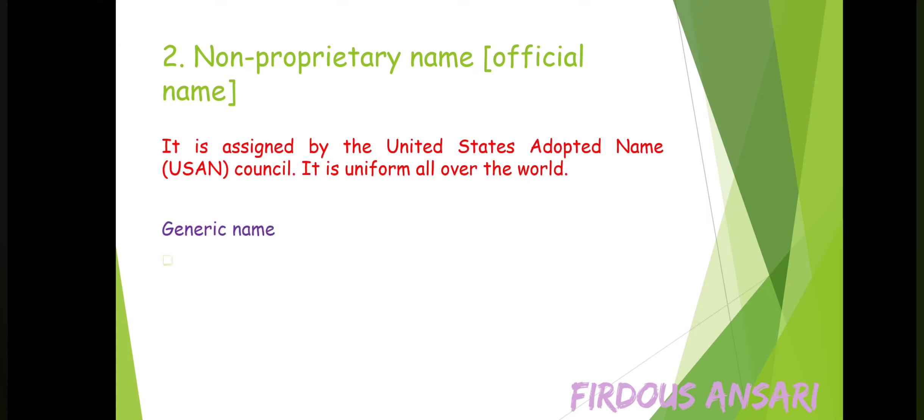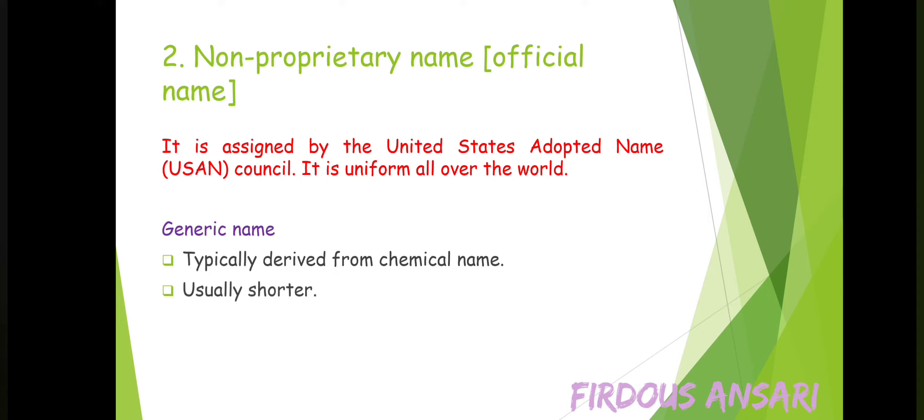Next, the generic name. Typically derived from the chemical name, it is usually shorter. In normal parlance, the generic name is used in place of the non-proprietary name, but as such this is incorrect, because generic should be applied to the chemical or pharmacological group of the compound. However, this misnomer is unlikely to be corrected because of wide usage, including that in official parlance.